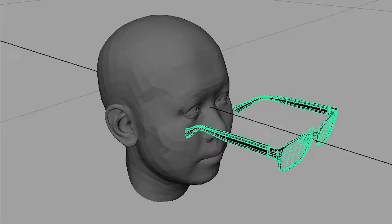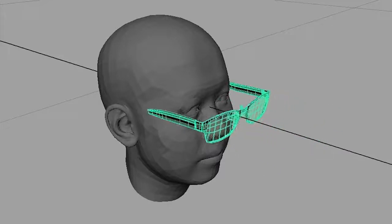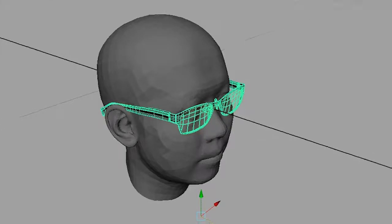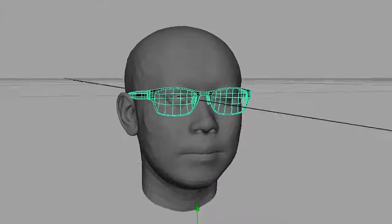We first position the eyeglasses onto the user's face geometry. Manual positioning of the eyeglasses is done for the first frame. For the subsequent frames, we use face tracking for automatic positioning.